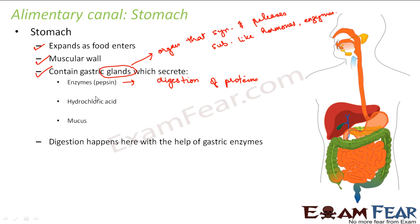The gastric glands also produce hydrochloric acid. What is the purpose of hydrochloric acid? This hydrochloric acid will kill microbes if there are any in the food. When we consume food, it might contain small bacteria, and this hydrochloric acid helps kill those microbes. Sometimes, though, the microbes are too numerous and can still cause infection even in the presence of the acid.